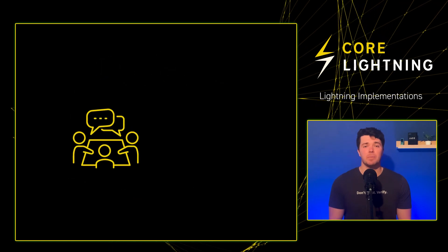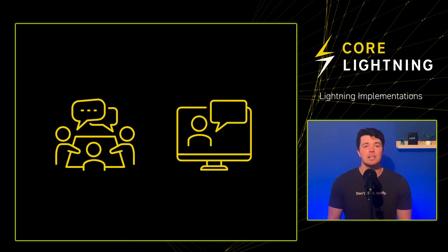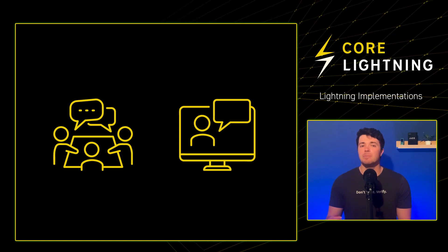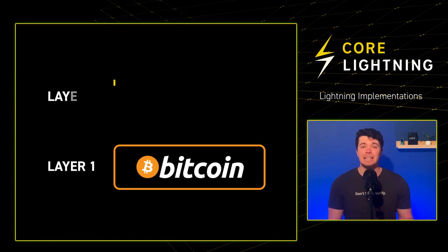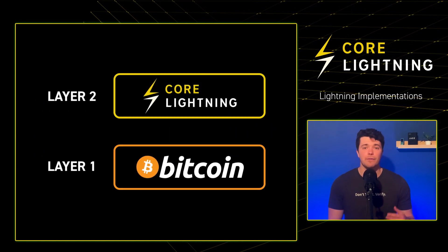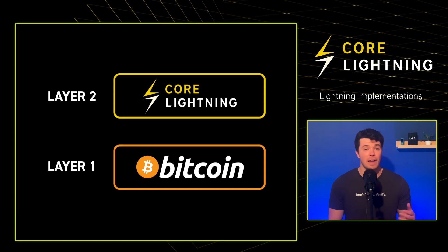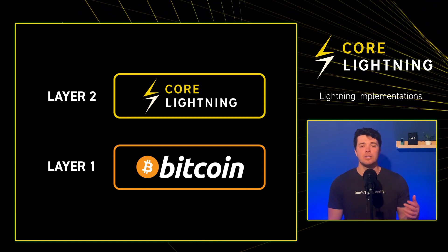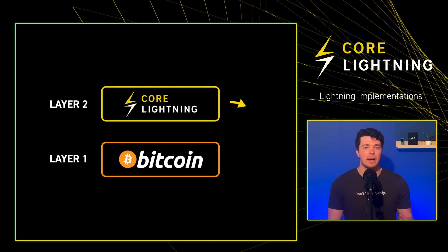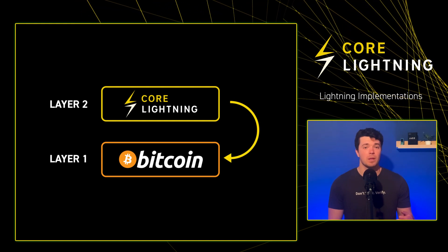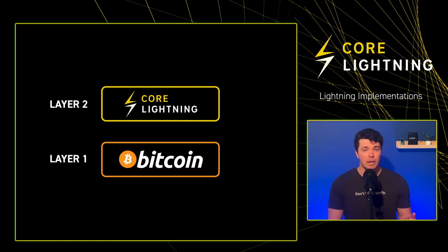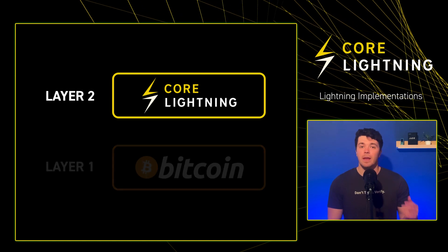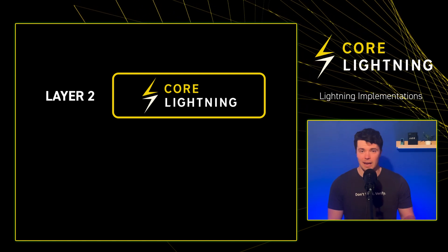Representatives from these implementations meet regularly to discuss spec proposals and new features. Lightning is regarded as a Layer 2 solution for the Bitcoin protocol, focused on fast, global micropayments. Another way to understand this relationship is that Lightning depends on the Bitcoin network to function, whereas the Bitcoin network can operate independently of Lightning. Without Layer 1, Layer 2 cannot exist.